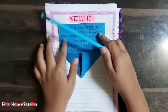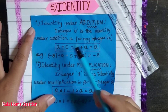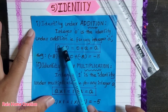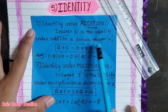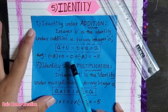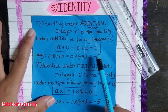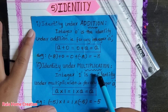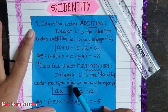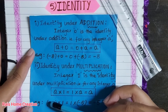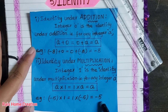Identity. Identity under addition: integer 0 is the identity under addition. That is, for any integer a, a plus 0 equals 0 plus a equals a. Example: minus 8 plus 0 equals 0 plus minus 8 equals minus 8. Identity under multiplication: integer 1 is the identity under multiplication. That is, for any integer a, a into 1 equals 1 into a equals a. Example: minus 5 into 1 equals 1 into minus 5 equals minus 5.